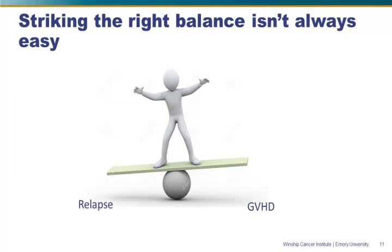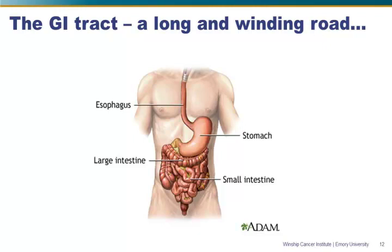I'm going to shift gears and talk about the GI tract. The mouth is technically part of the GI tract, but other sessions have focused on that, so I'll start below the mouth at the esophagus — the conduit to the GI tract — which leads into the stomach where things get churned and biochemically broken up. The small intestine is the primary site where nutrients are absorbed, and then the large intestine is where stool is formed into a solid mass and excreted.